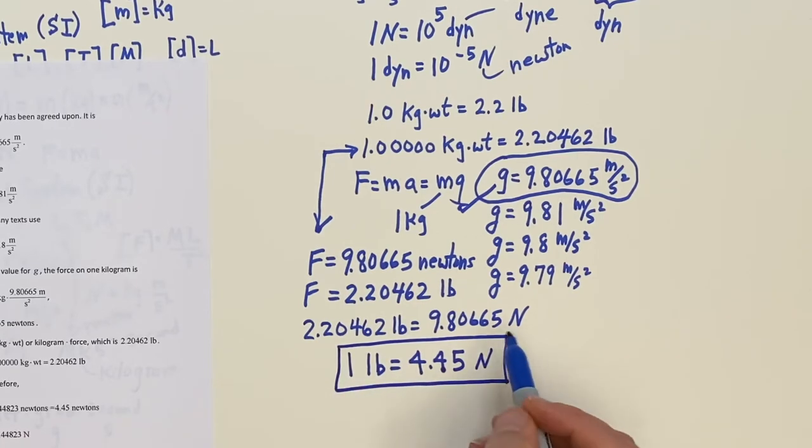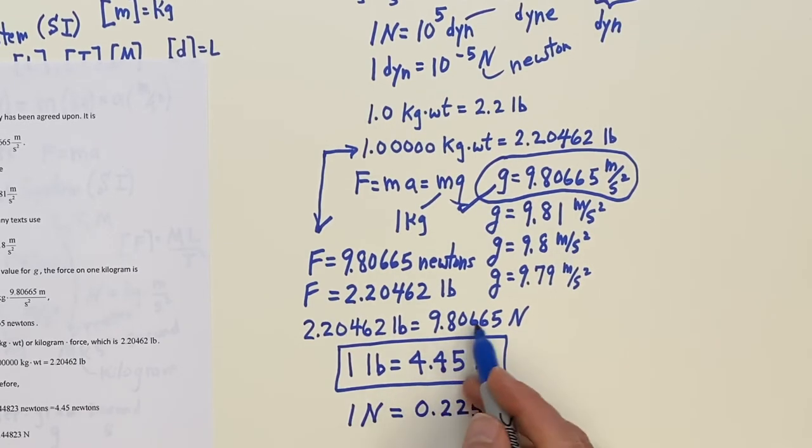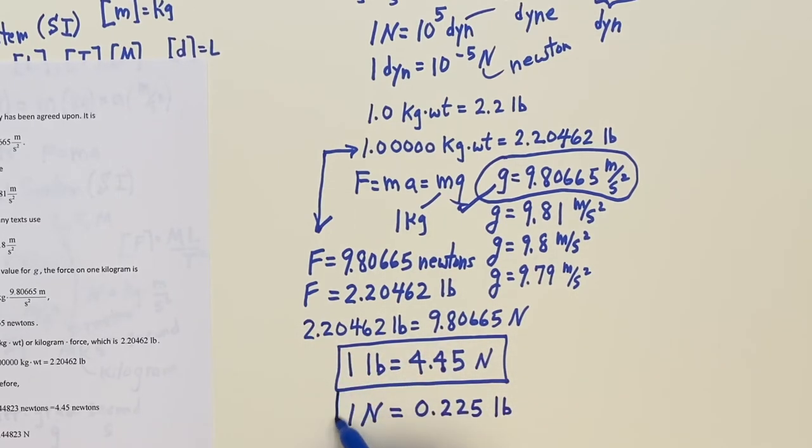The connection is that this is going to be the same as 2.20462 pounds. So that's the conversion. So you can divide both sides. When you set this up, this equation 2.20462 pounds equals 9.80665 Newtons. You can now divide both sides of the equation by this 2.20462 and get one pound equals when you divide that out, you'll get 4.4. I'm going to round this off now to three significant figures. You get this conversion.